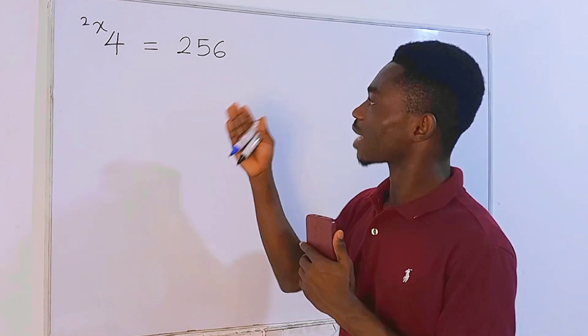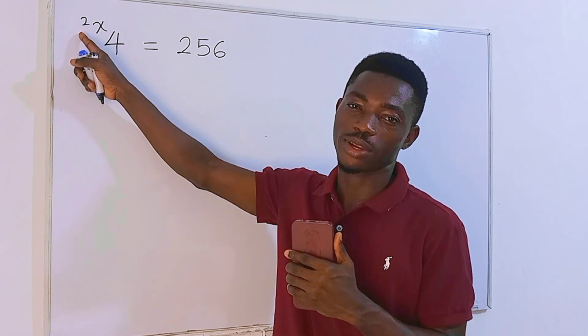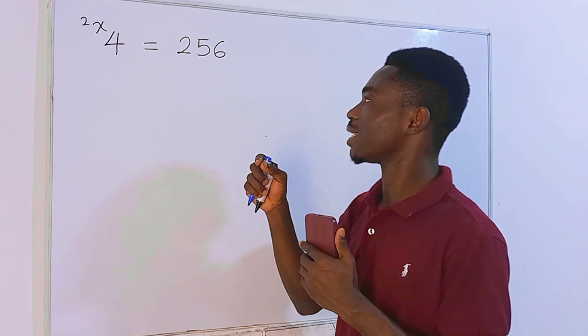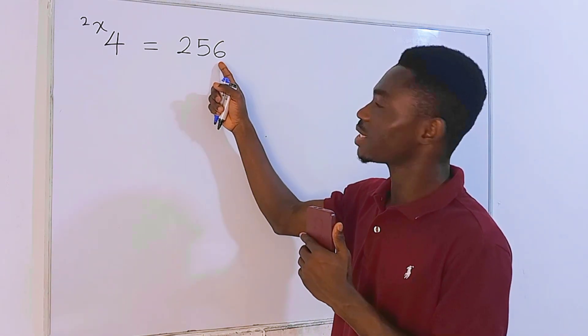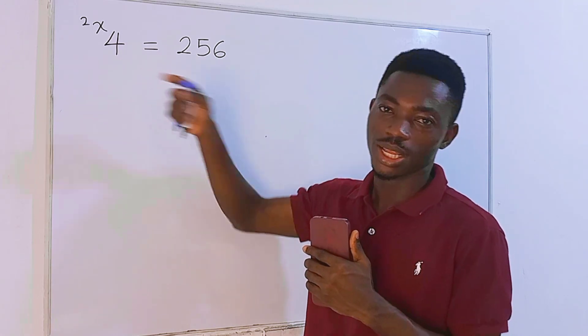Like I said, this is a tetration equation so we can never take log in order to drop this power down. No, we can never do that. Let's do this instead. Let's rewrite 256 in such a way that we have a base of 4. Is that possible? Let's check it out.